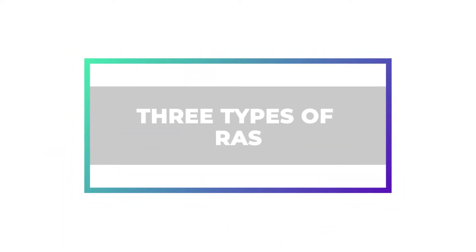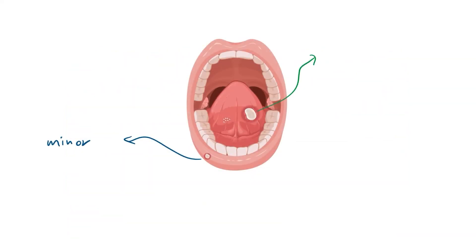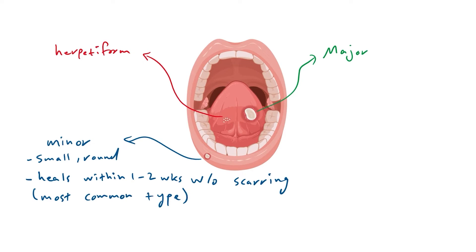There are three types of RAS: minor, major, and herpetiform. Minor RAS is the most common form and typically presents with small, round ulcers that heal within one to two weeks without scarring. They appear most commonly in the anterior region of the mouth.